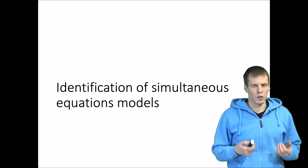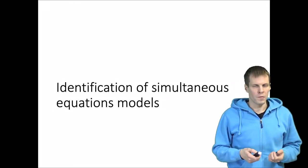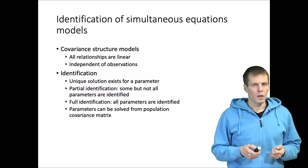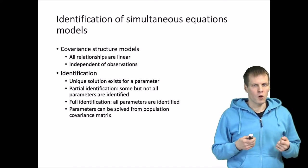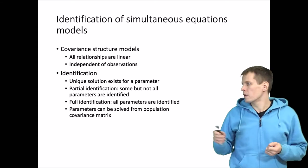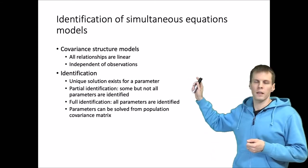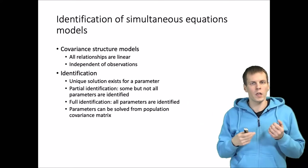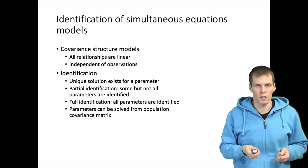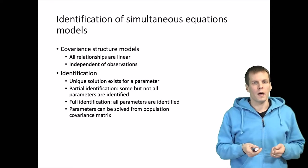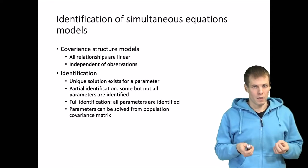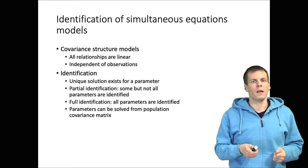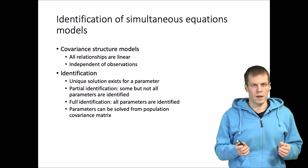How can we know whether a simultaneous equations model is identified? There are a couple of different techniques for figuring out. The set of techniques applies to covariance structure models. In these models all relationships are linear, so there are no interactions, no exponential relationships, no u-shapes, and all observations are independent.